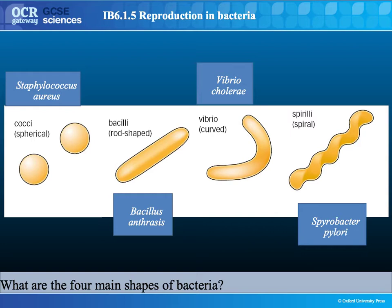The second shape is bacilli, which is rod-shaped — like the bacteria we saw on the previous slide. An example is the bacterium Bacillus anthracis, which causes the infection anthrax, which you may have heard of in the context of terrorist attacks.